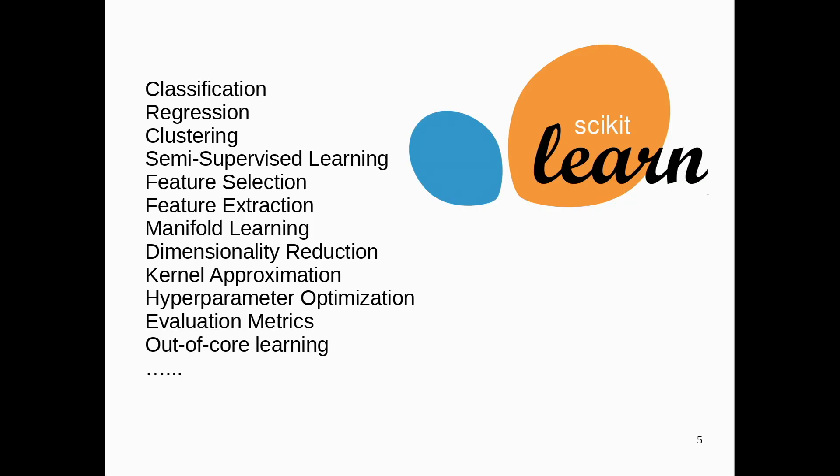So scikit-learn has a lot of stuff in it. It has a bunch of algorithms. Everything you find in a standard machine learning textbook will be implemented there, like classification, regression, k-means, clustering, DBSCAN, t-SNE. And there's all of these algorithms together with tools to evaluate these algorithms and tools to tune hyperparameters, do cross-validation, and these things.